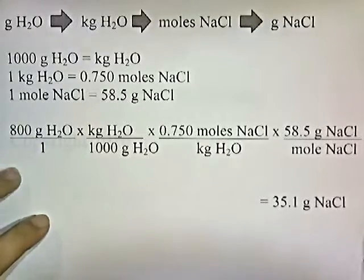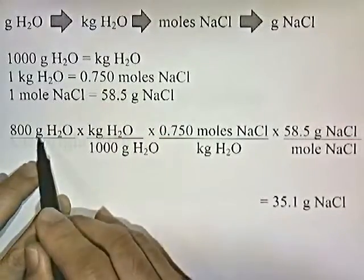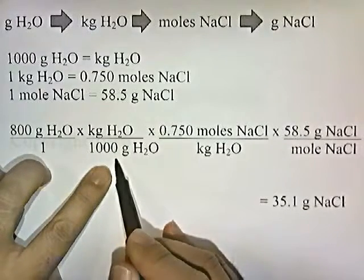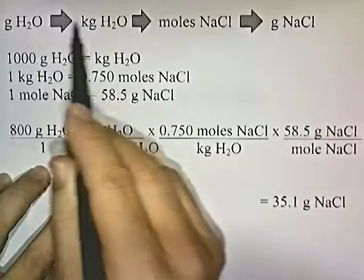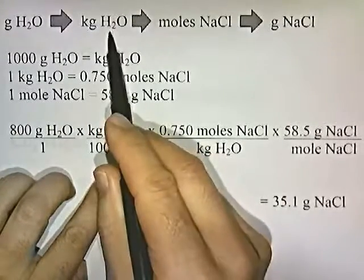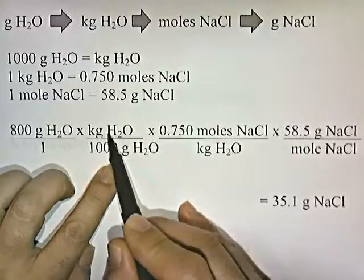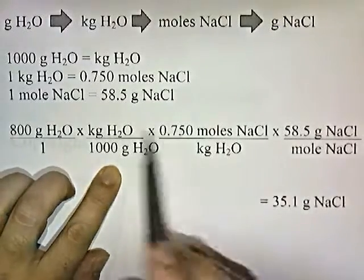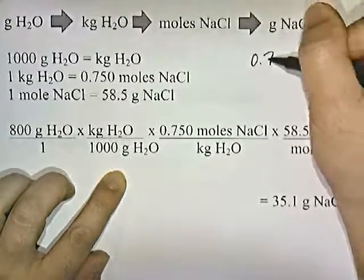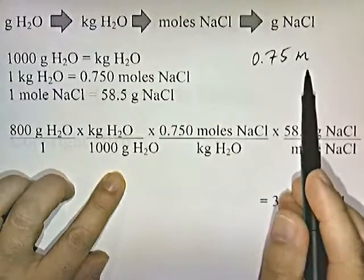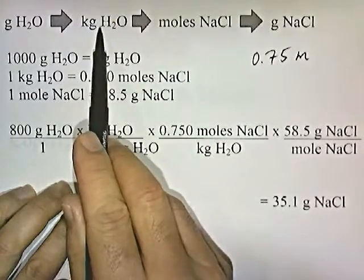Starting with 800 grams of water over 1, we go from grams of water to kilograms of water: put 1,000 grams of water on the bottom and a kilogram of water on top, since 1,000 grams equals a kilogram. That's the first step — grams of water converted to kilograms. Now from kilograms of H2O into moles of NaCl: I've got kilograms of H2O on top, so I put kilograms of H2O on the bottom and 0.75 moles of NaCl on top, because 0.75 molal means a kilogram of water contains 0.75 moles of NaCl.